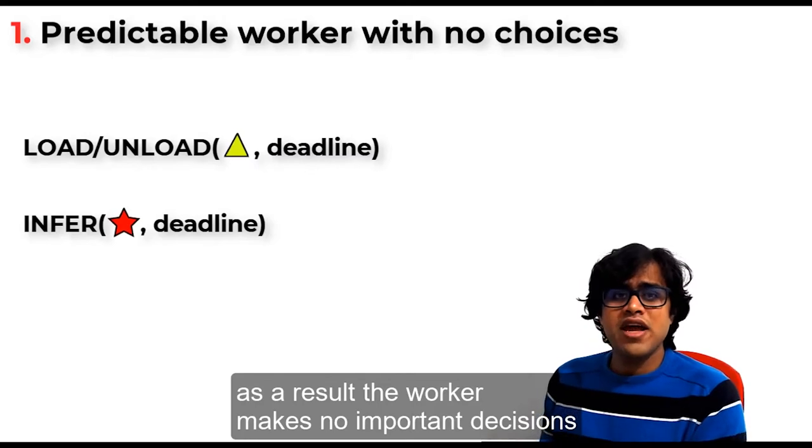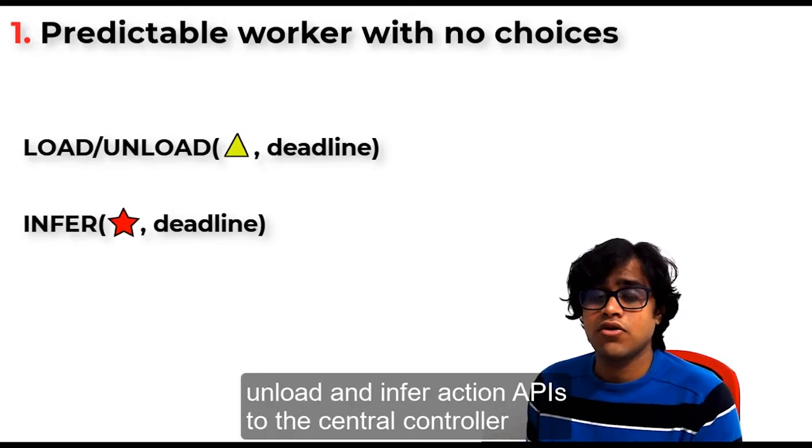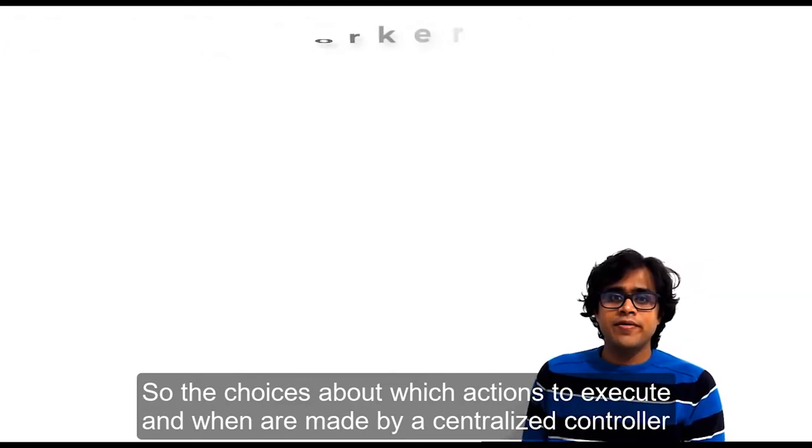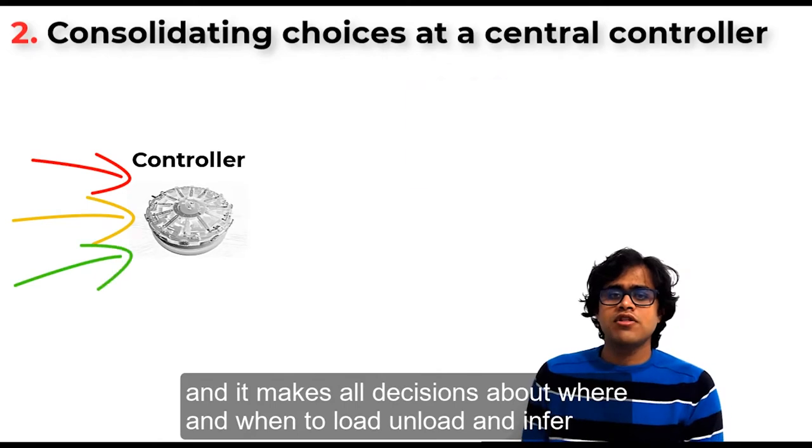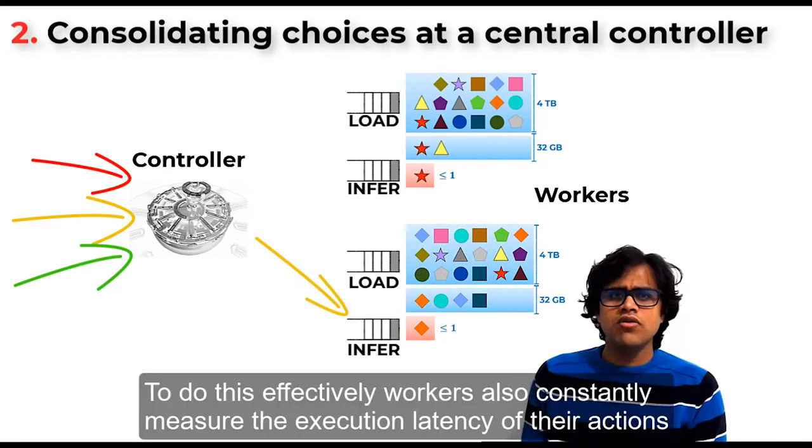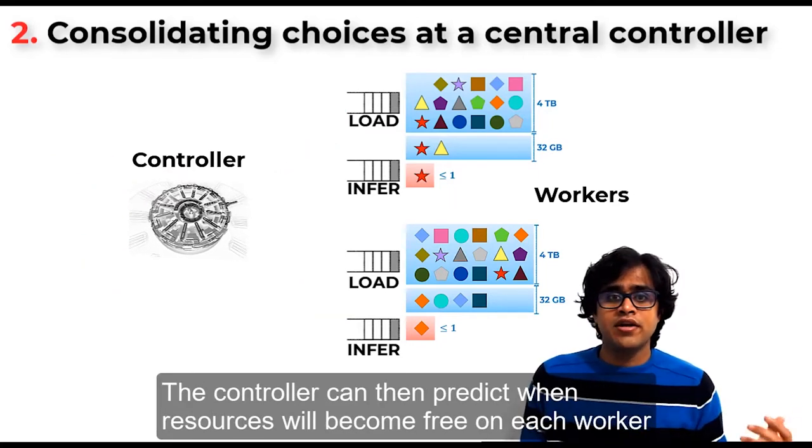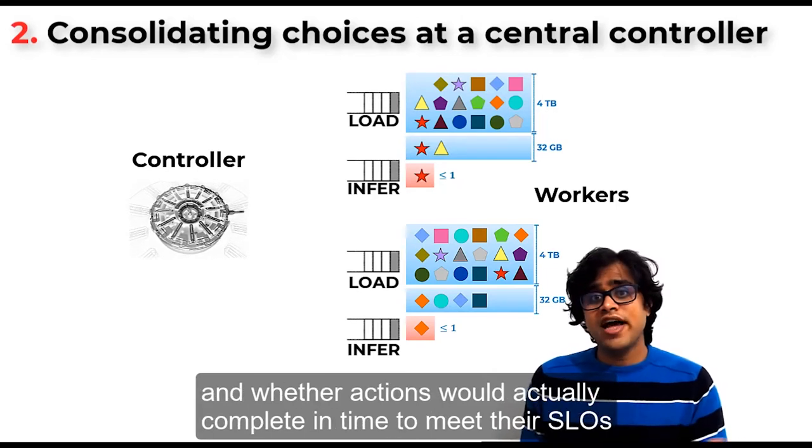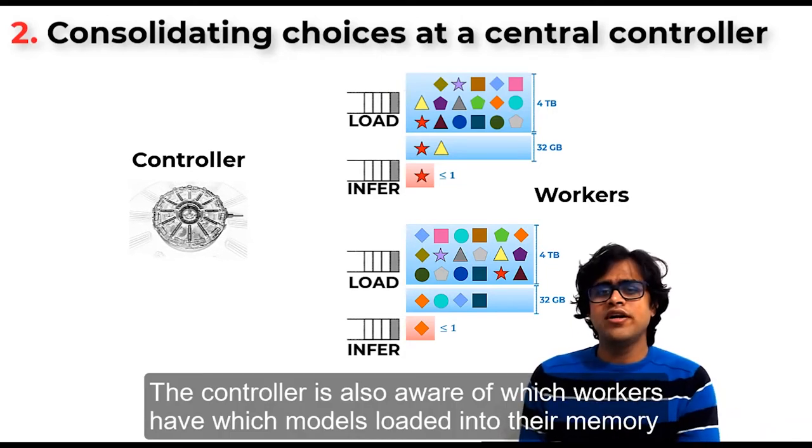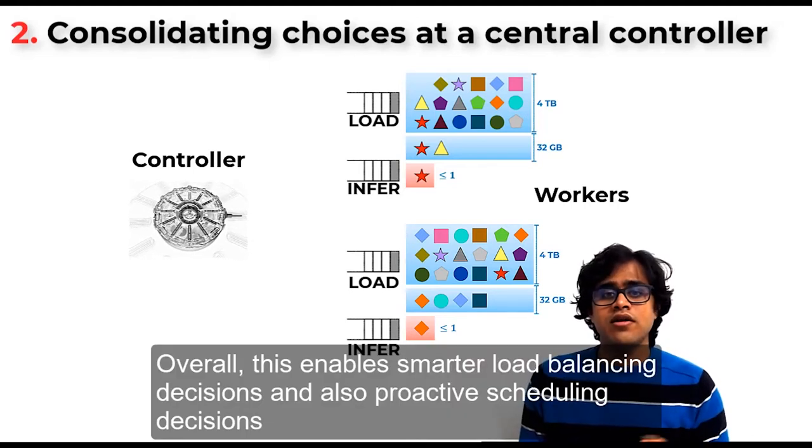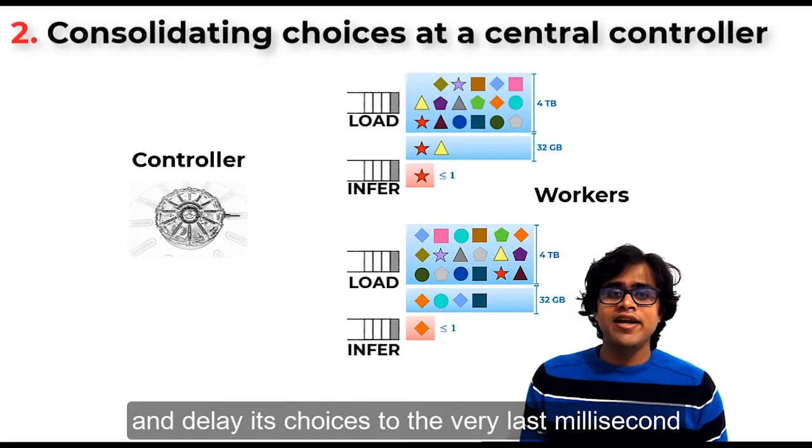As a result, the worker makes no important decision. It has outsourced all these decisions via the load, unload, and infer action APIs to the central controller. So the choices about which actions to execute and when are made by a centralized controller. The controller receives all of the incoming inference requests from all users and makes all decisions about where and when to load, unload, and infer. To do this effectively, workers constantly measure the execution latency of their actions and send those measurements back to the controller. The controller can then predict when resources will become free on each worker and whether actions would complete in time to meet their SLOs. The controller is also aware of which workers have which models loaded into their memory. Overall, this enables smarter load balancing decisions and proactive scheduling decisions. It enables a controller to predict worker hotspots ahead of time and delay its choices to the very last millisecond.